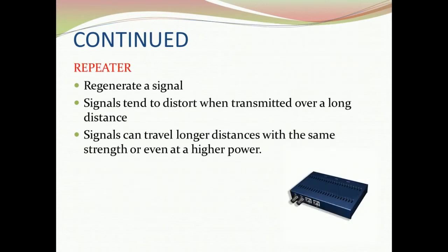The next networking device is repeater. Its job is to regenerate signals over the same network before the signals become too weak or corrupted when transmitted over long distances. As you can tell from its name, it repeats the signal. When we send a signal over a long distance, it can become weak or corrupted.